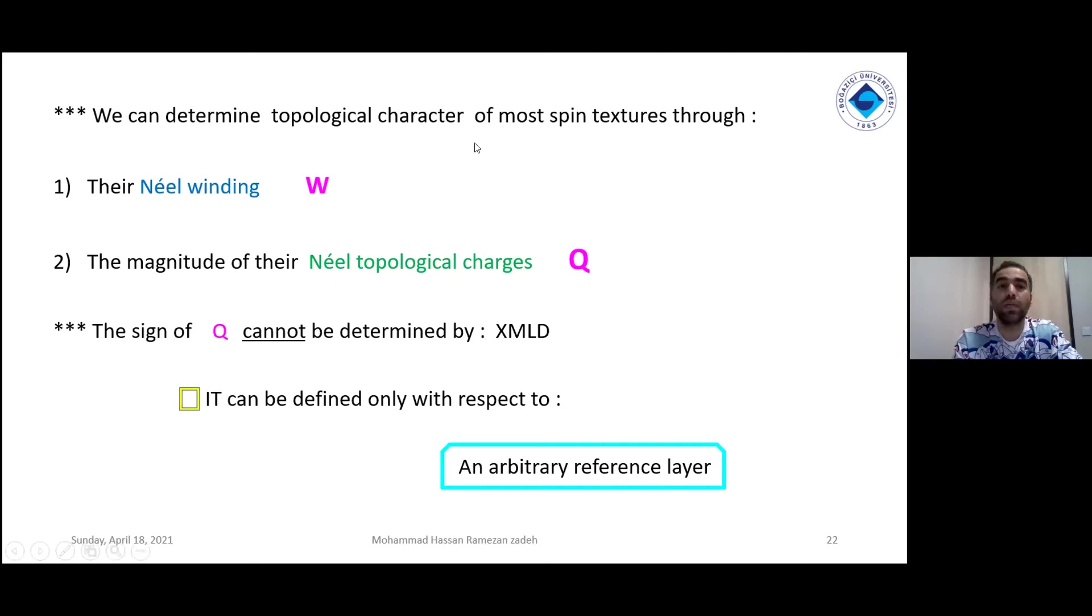By using the technique we discussed here, they could combine horizontal images at about six angles and they find interesting figures. We will see them in the next slide. They say that we can determine topological character of most distinct textures through winding number q, Néel topological charge. The sign of q cannot be determined by XMLD. They need a reference layer to study about this sign.